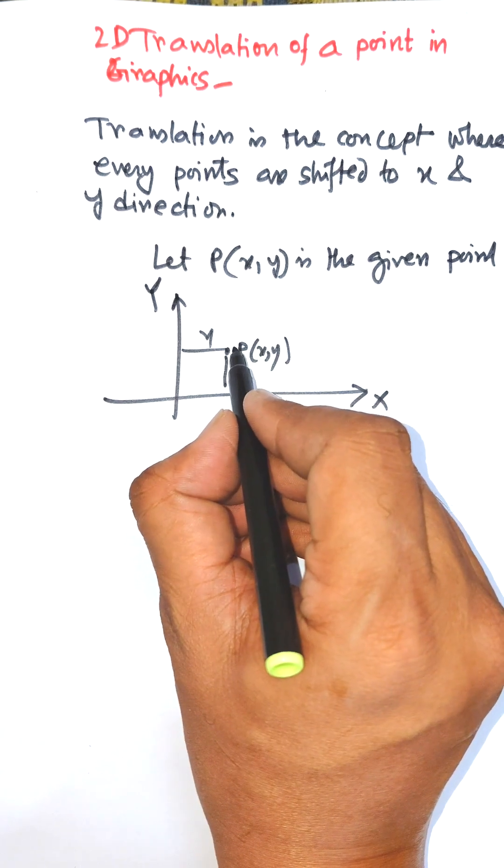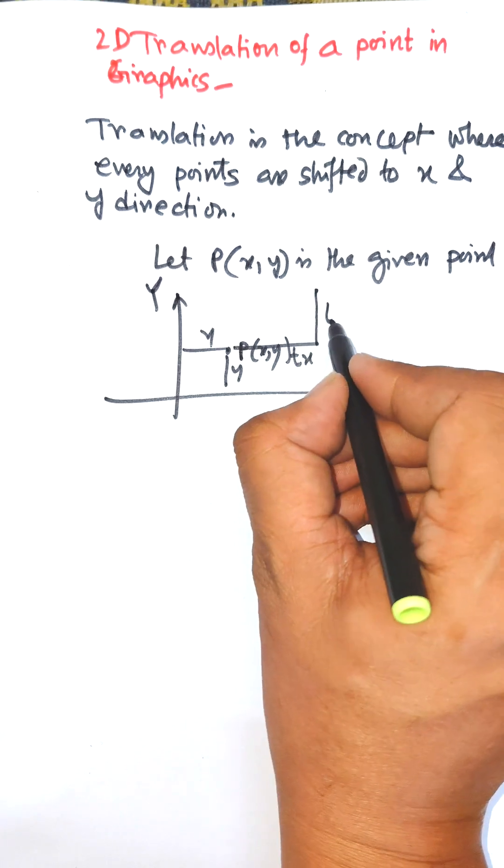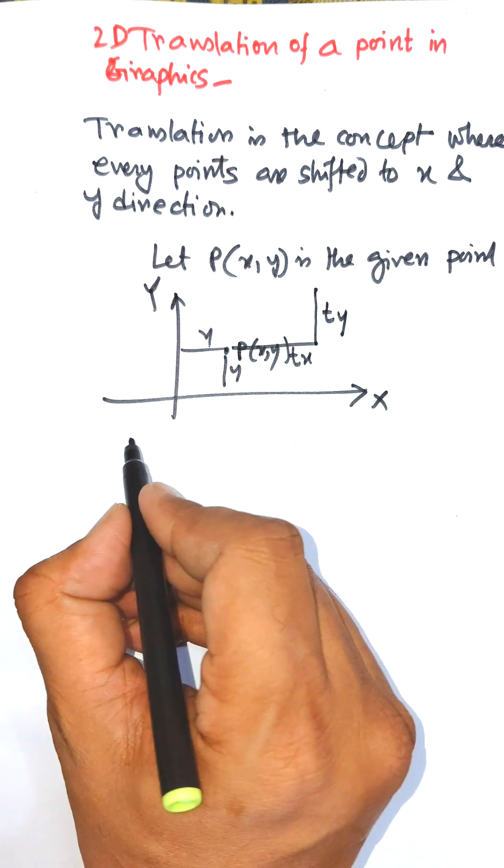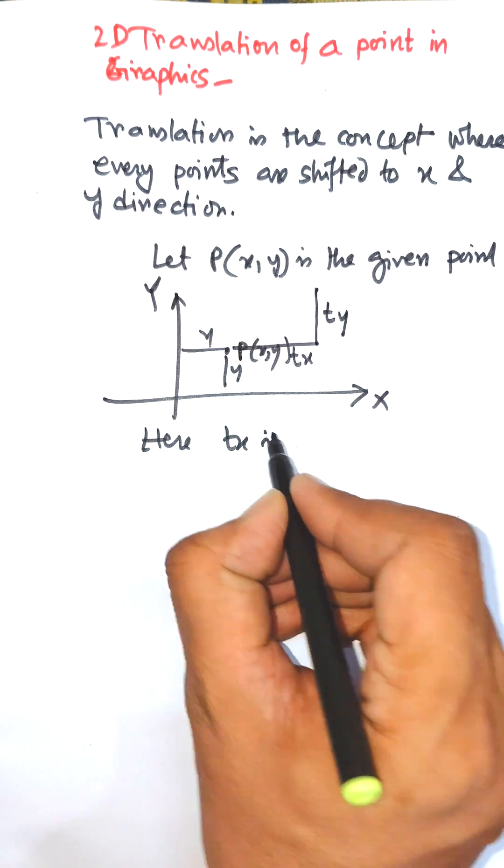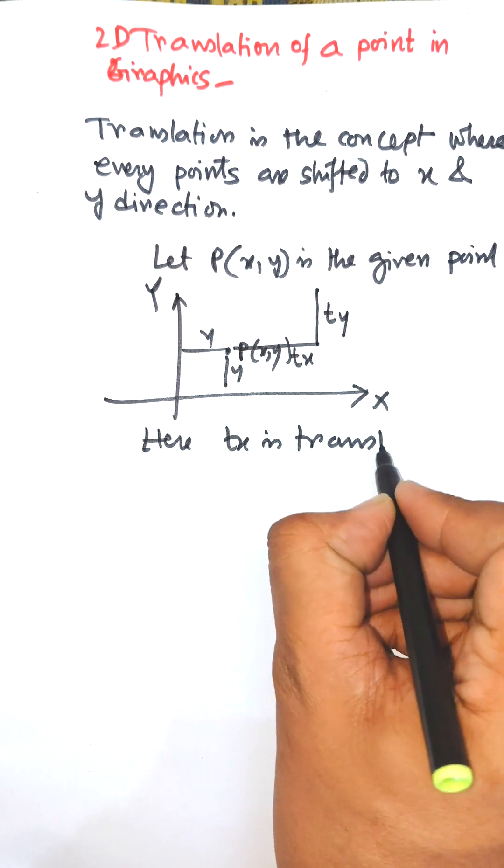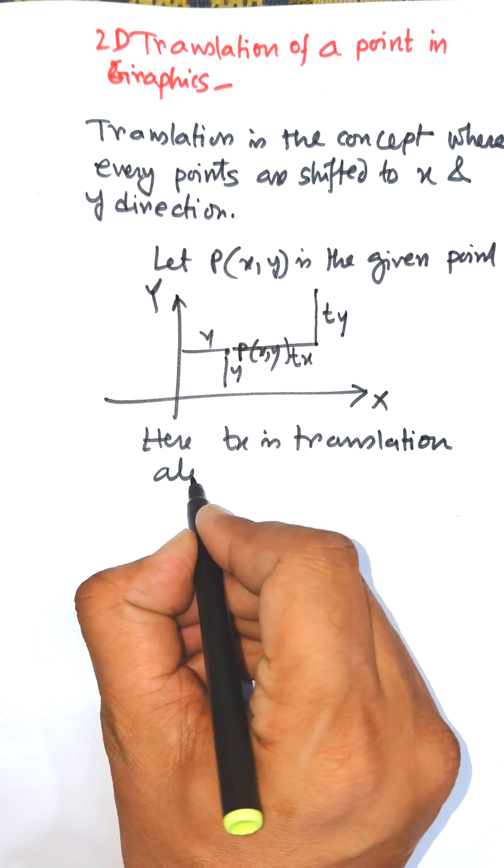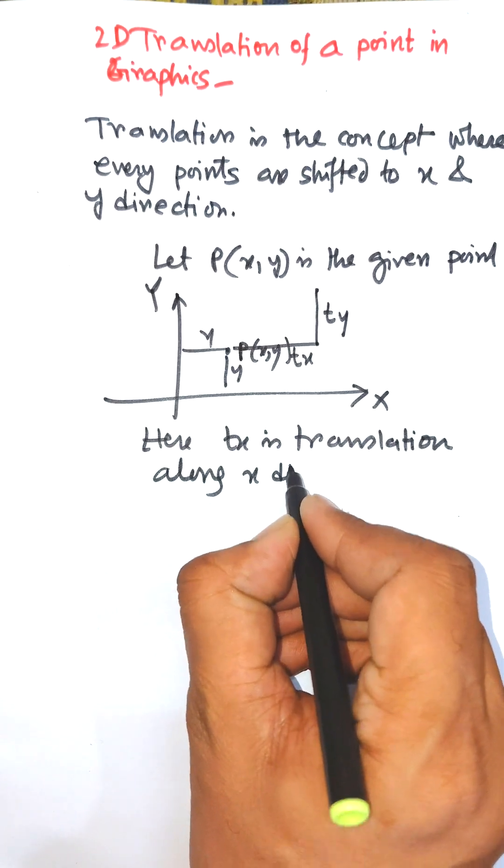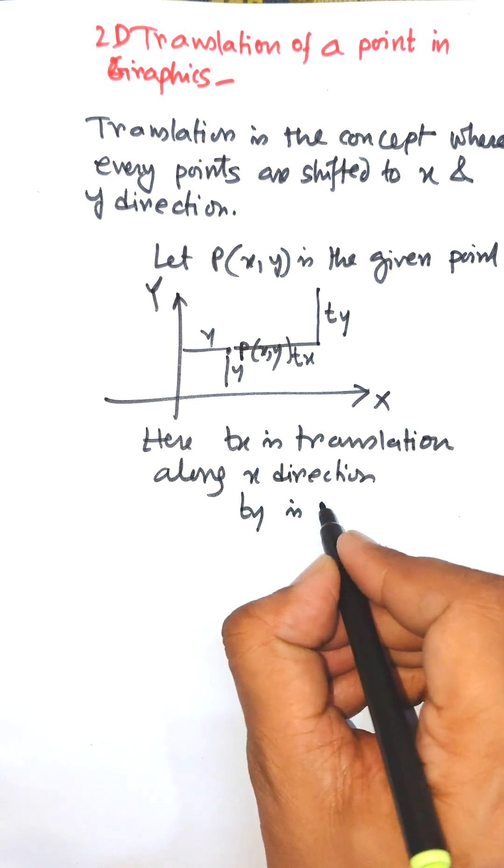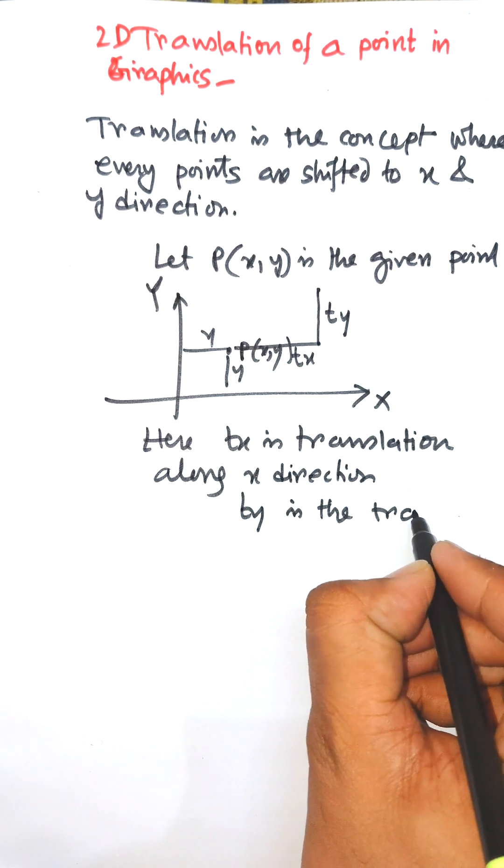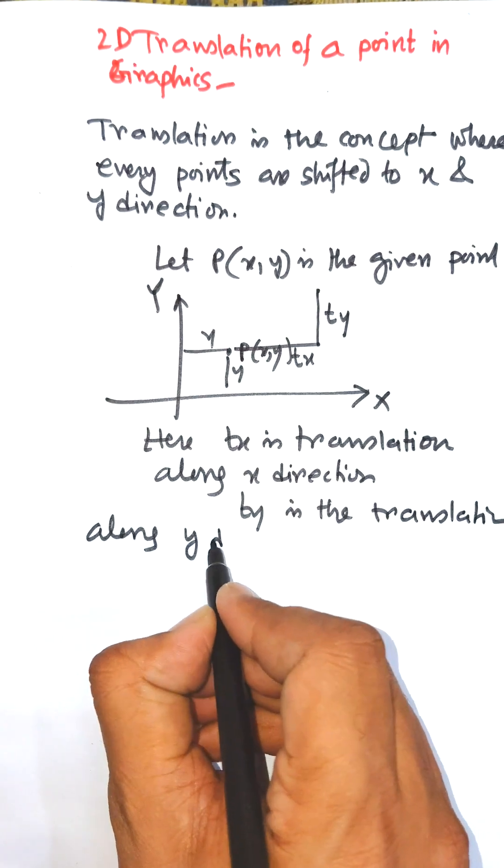This is known as the translation vector. Here tx is the translation along the x direction, and ty is the translation along the y direction.